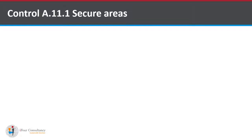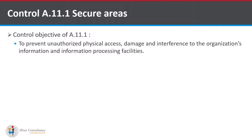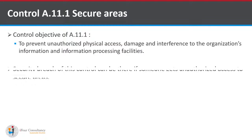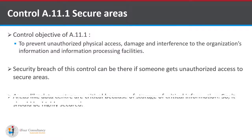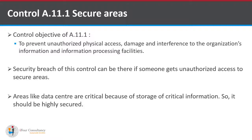Now let's start with the first sub-control A.11.1, that is Secure Areas. The control objective of A.11.1 is to prevent unauthorized physical access, damage, and interference to the organization's information and information processing facilities. A security breach of this control can occur if someone gains unauthorized access to secure areas by social engineering, shoulder surfing, etc. Areas like Data Centers are critical because of the storage of critical information, and should be highly secured from unauthorized access.